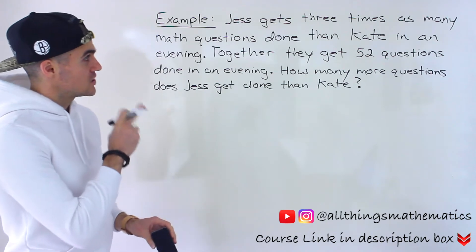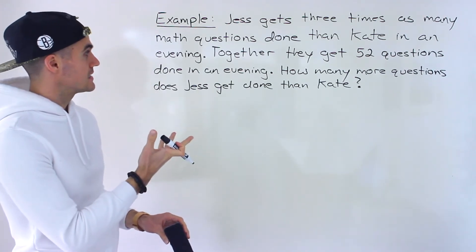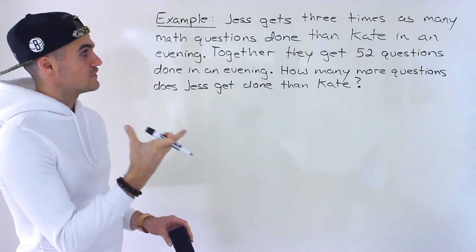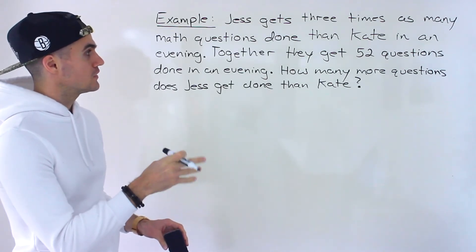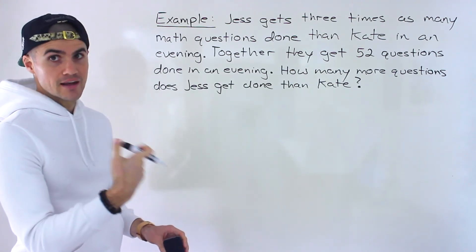And we're told that Jess gets three times as many math questions done than Kate in an evening. And together they get 52 questions done in an evening. How many more questions does Jess get done than Kate?